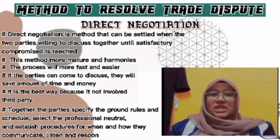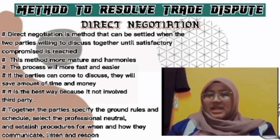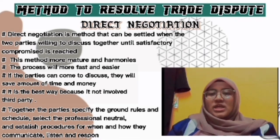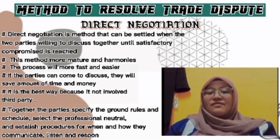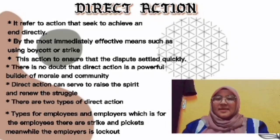Through direct negotiation, the parties collectively retain complete control of the process and its outcome. Together, the parties specify the ground rules and schedule, select the professional neutral, and establish procedures for when and how they communicate, listen, and respond. If the parties can come to an agreement during their negotiating process on their own, they save the most amount of time and money, and can retain their relationship and even better their future interactions.